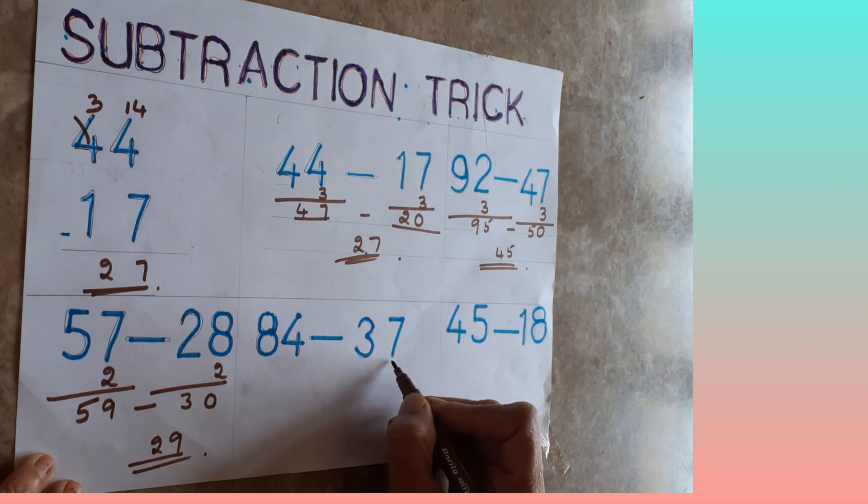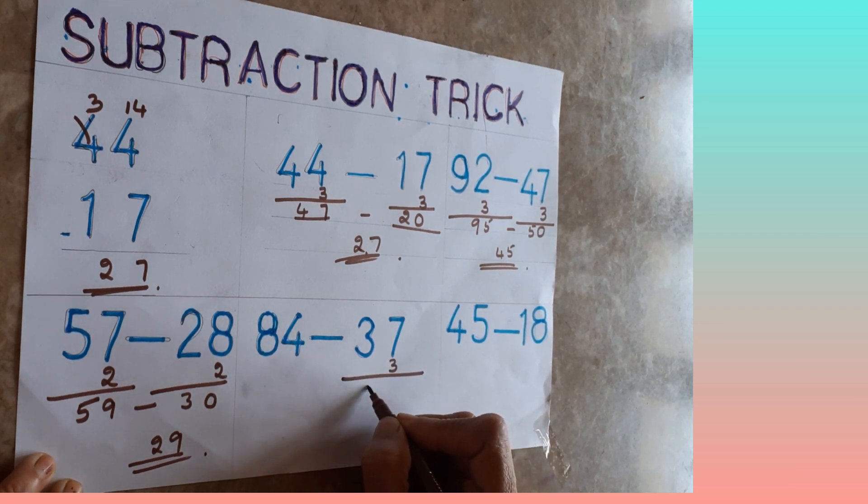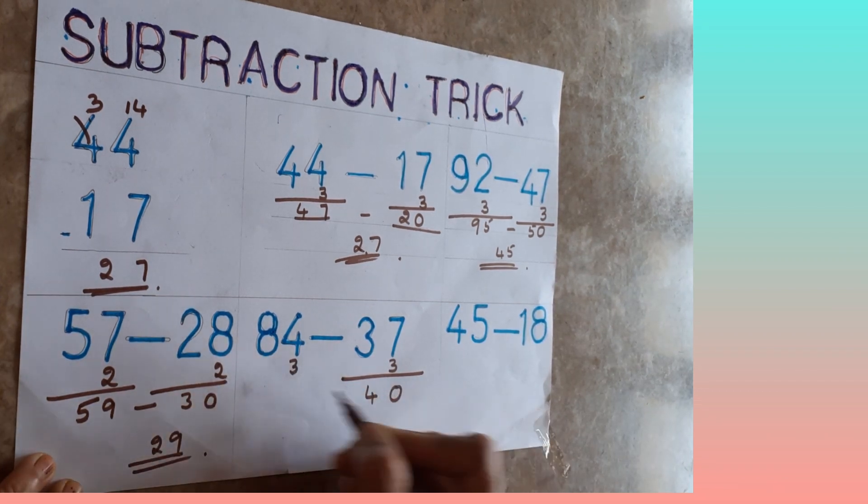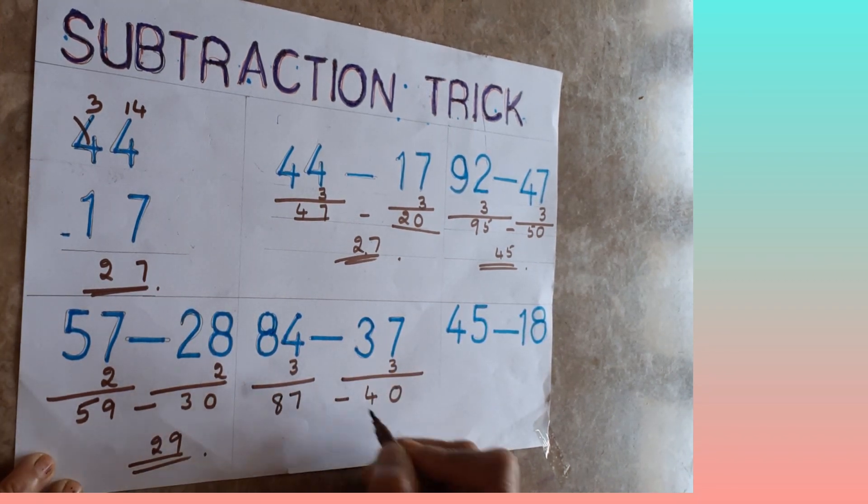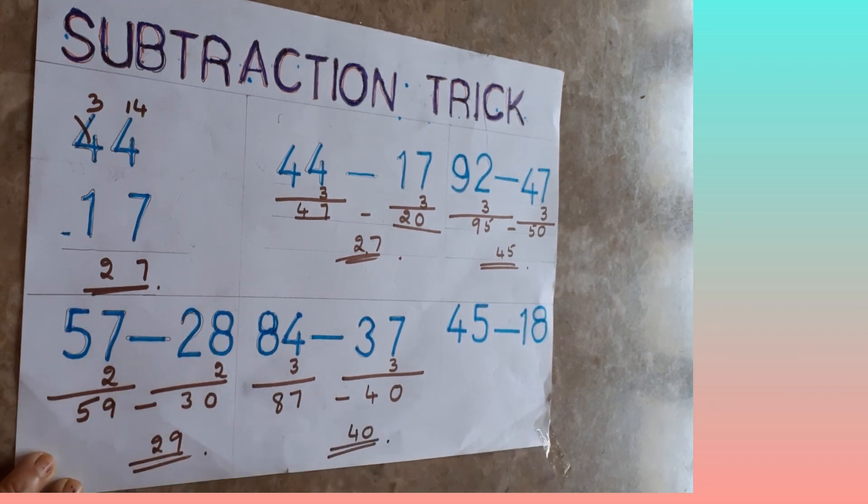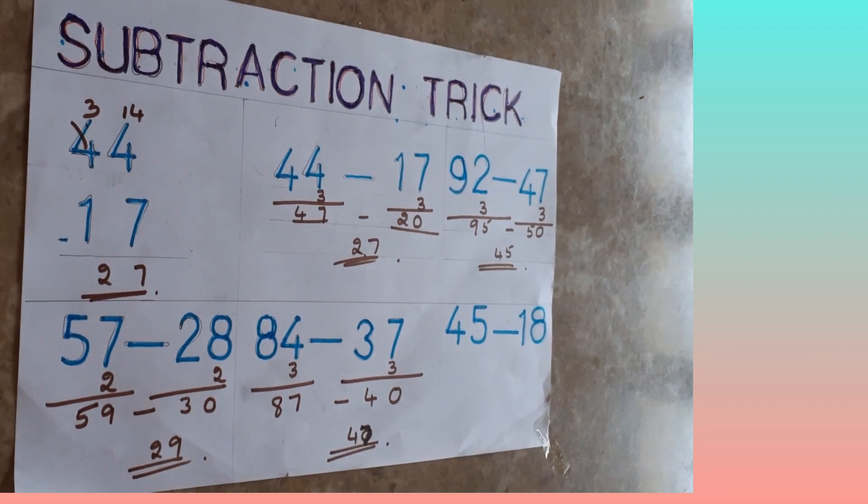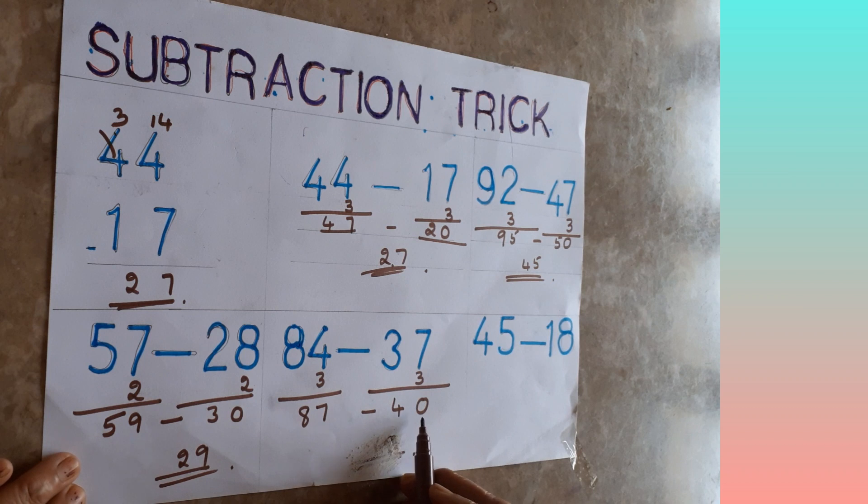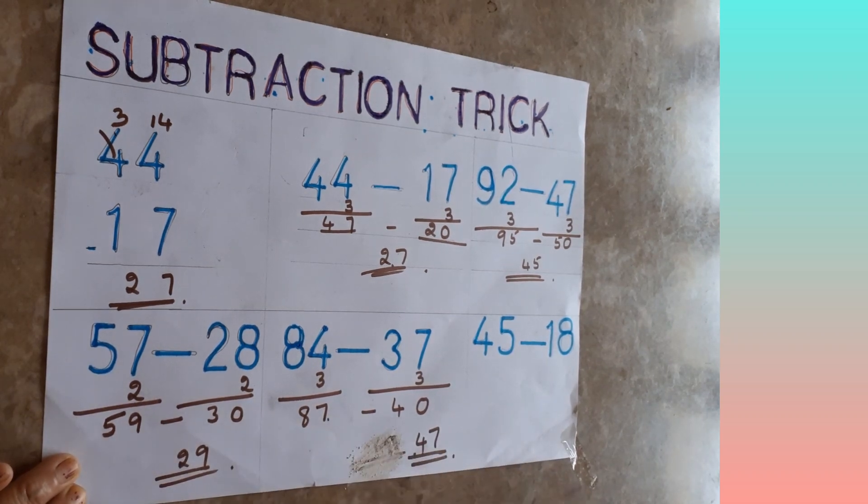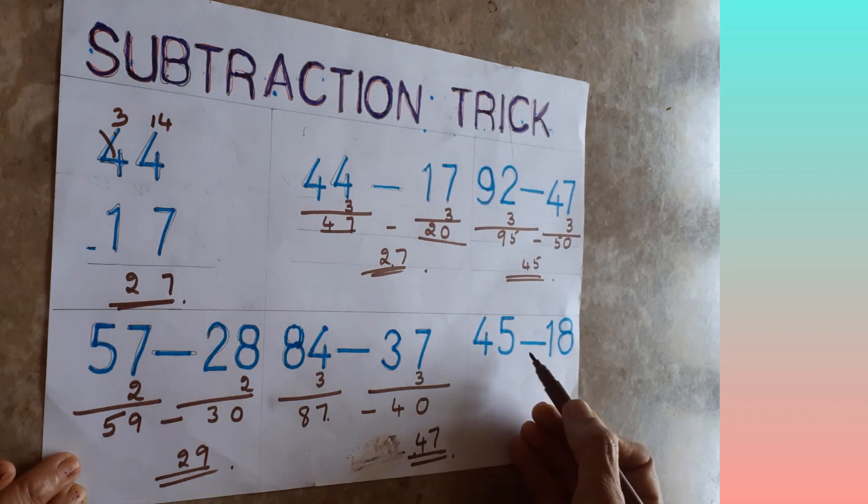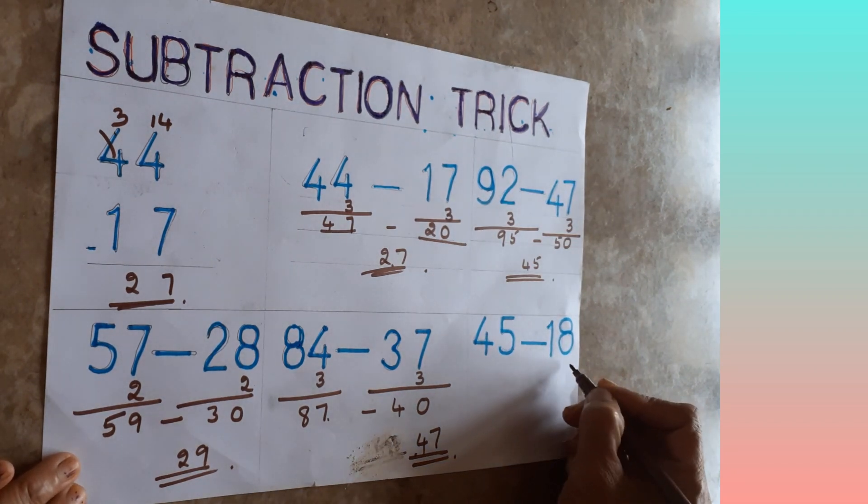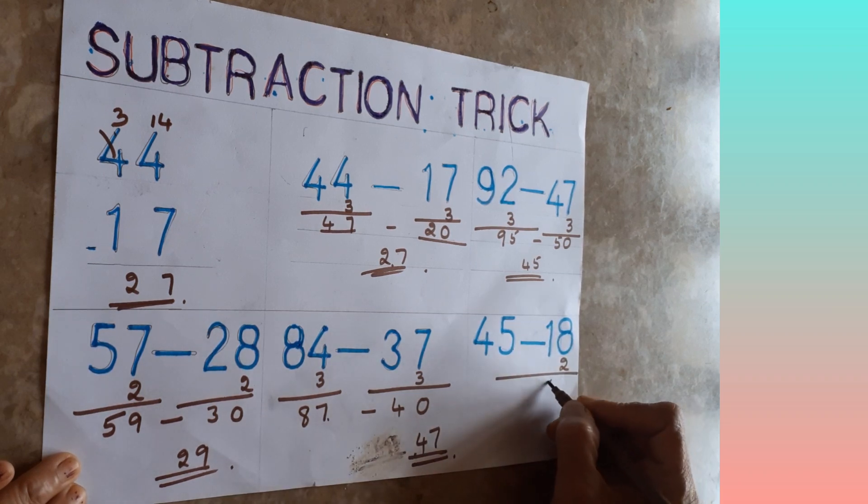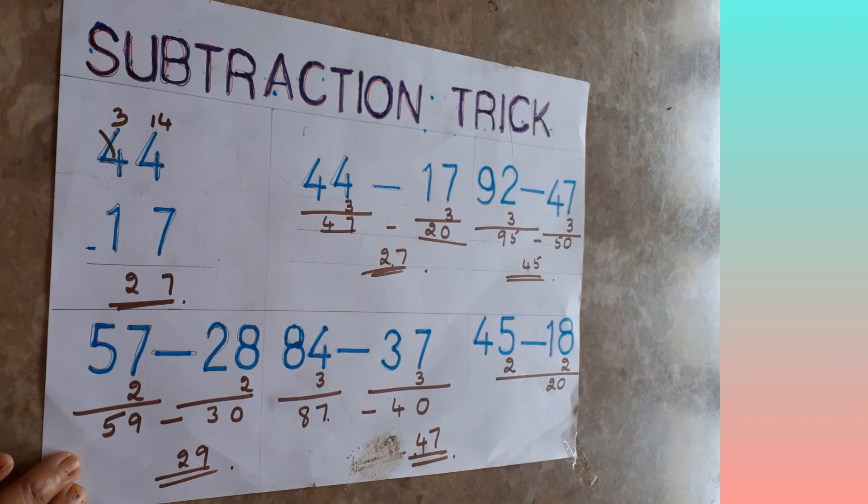84 minus 37. Here 7 is there, how much you have to add? You have to add 3, then it will become 40. Here also same number, whatever number you are adding, same number you have to add here also in units place. 4 plus 3 is 7. 87 minus 40. 7 minus 0 is 7, 8 minus 4 is 4. That's all is the answer. 37 if you add 3 it will become 40. 84 if you add 3 it will become 87. 7 minus 0 is 7, 8 minus 4 is 4. 47, that's all is the answer.